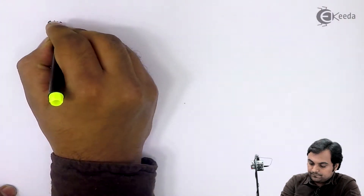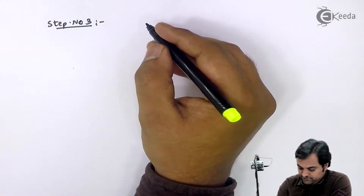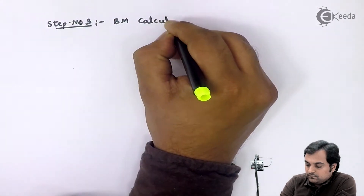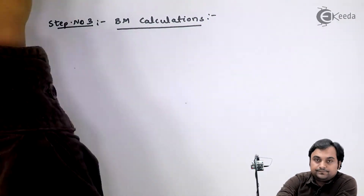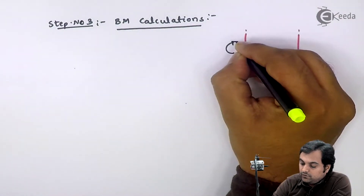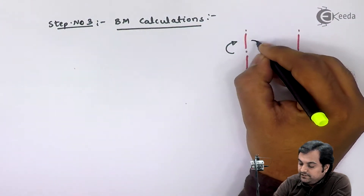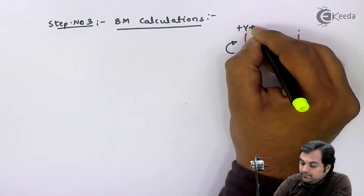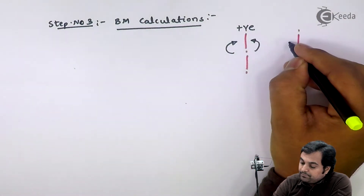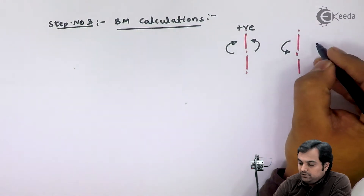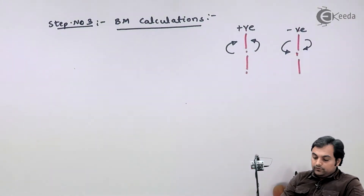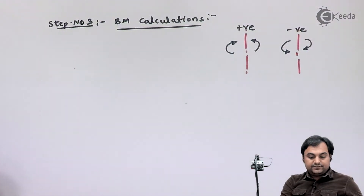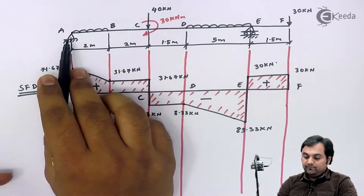This is step number three, the continuation of the problem — bending moment calculations. I will first draw the sign convention: clockwise moment to the left and anti-clockwise moment to the right is positive; anti-clockwise moment to the left and clockwise moment to the right is negative.